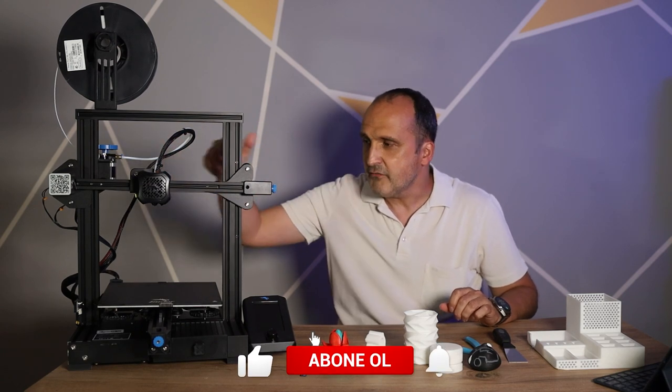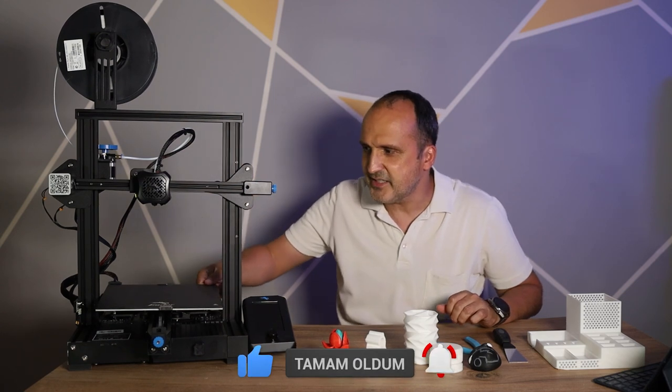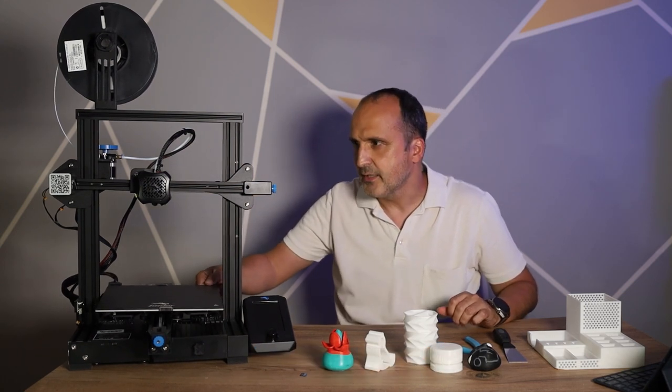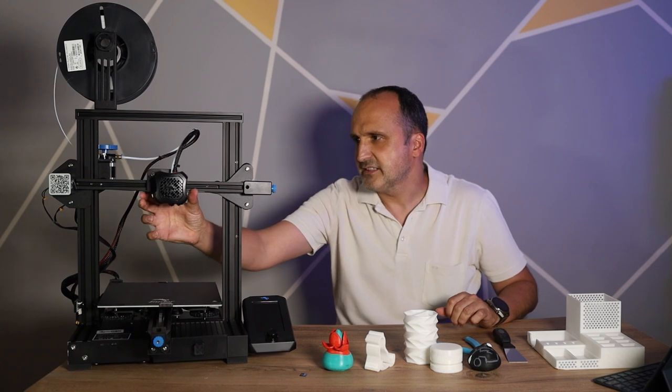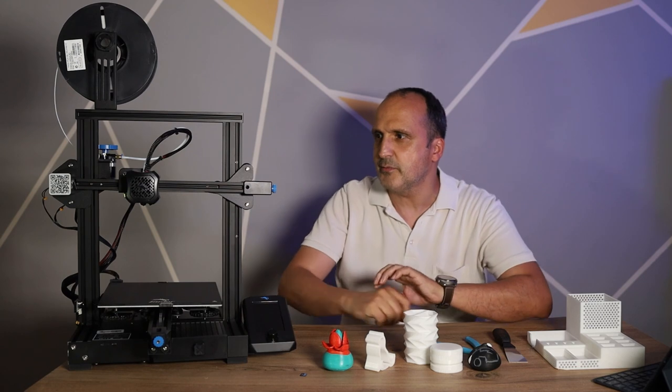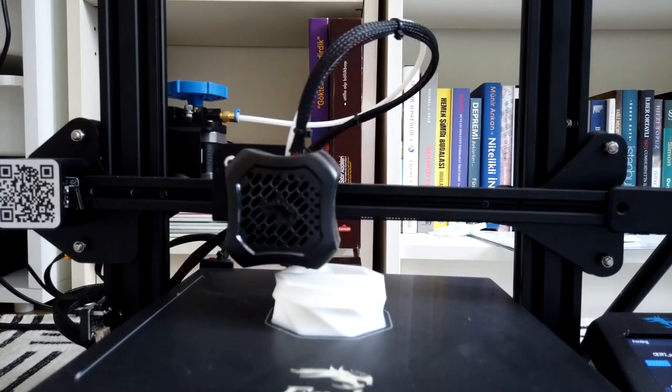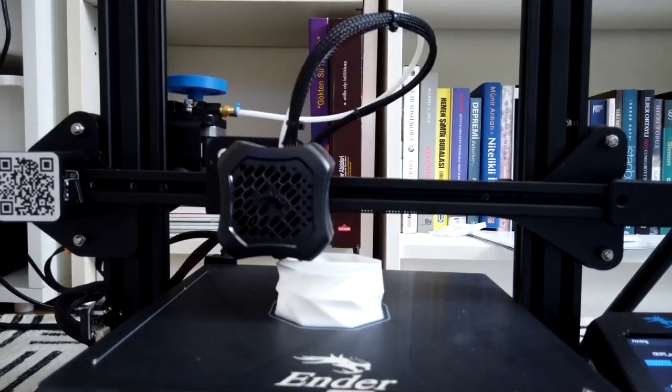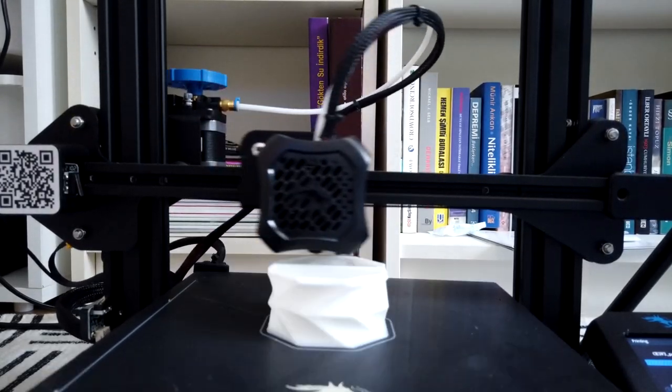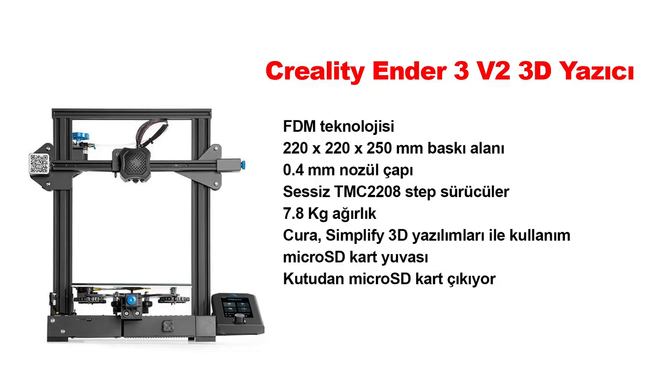Polilaktik asit dediğimiz filament baskısı yapan, farklı farklı türlerde de baskı alabiliyor bu arada. Ve 3 eksende hareket edebilen X, Y ve Z eksende tablamız ileri geri oynayabiliyor. Kafamız da böyle sağa sola oynayabiliyor, aynı zamanda yukarı aşağı da bir hareket yapıyor. Bu şekilde tabaka tabaka katman katman baskı yapar. Ekranda bir tablo görüyorsunuz, tabloda teknik özellikleri size veriyorum.